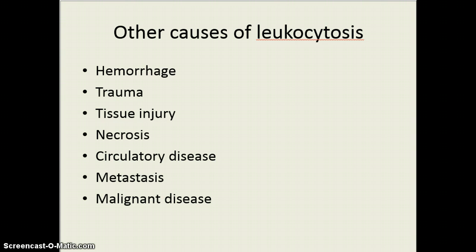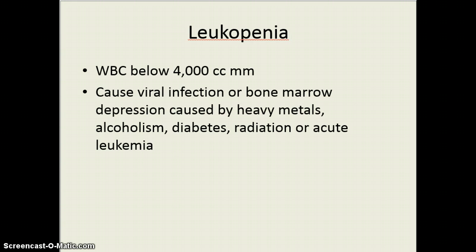Other causes for the white blood cell count to go up — leukocytosis — include hemorrhage, trauma, circulatory diseases, cancers or metastasis, and malignant diseases. Leukopenia means a low white blood cell count — 'penia' means small, 'leuco' means white. Below 4,000 for a white blood cell count is usually associated with an overwhelming viral infection. It can also occur with diabetics having significant health issues or in alcoholics.